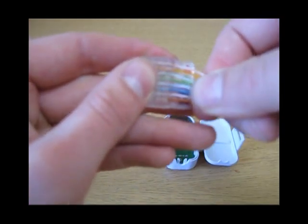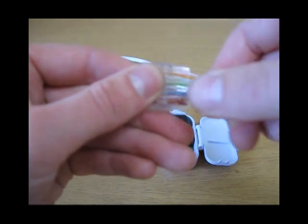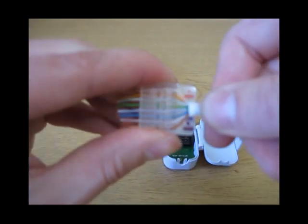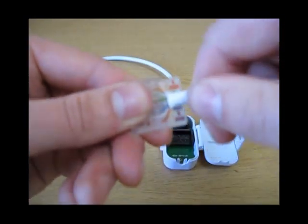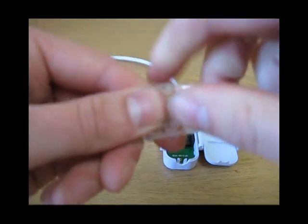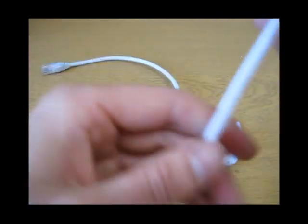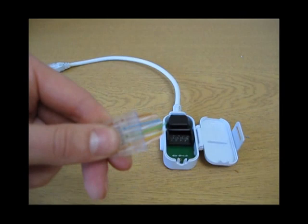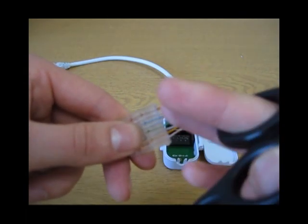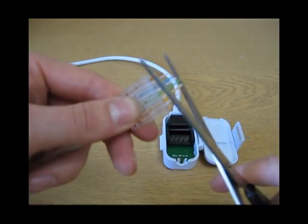You want to push, feed them all the way through the holes until they come out the other end. Try and get the jacket right up to the tube openings. Once you've got it like that, you take your cable cutters and see these wires sticking out. You want to cut them off so it's flush.